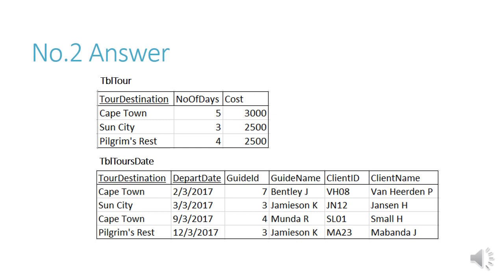For number two, table Tours will have tour destination, number of days, and cost in one table — these are the partial dependencies. Then the other table, table Tours Date, will have tour destination, departure date, guide ID, guide name, client ID, and client name.